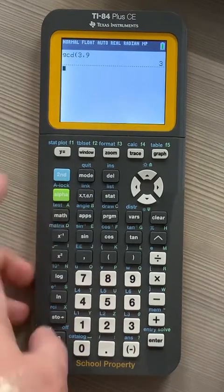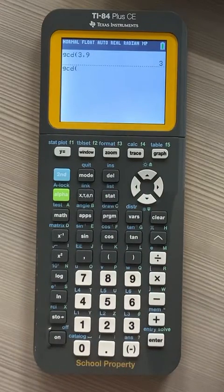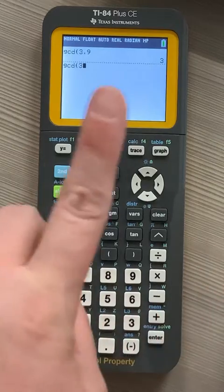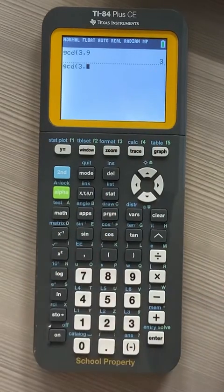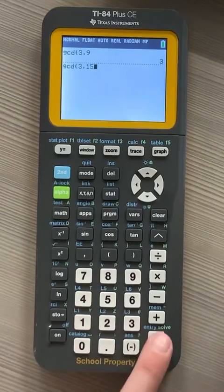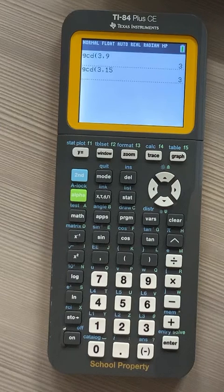And then I'm going to do the process again. And this time I'm going to use 3, which is what it gave me before, the 3 right there. Use my comma, and I'm going to put 15. So the greatest common factor between those would be 3.